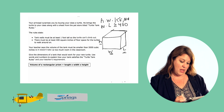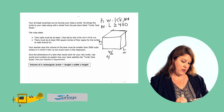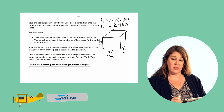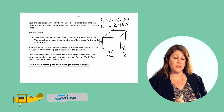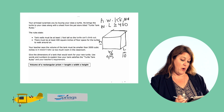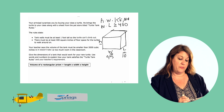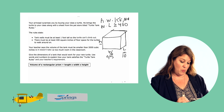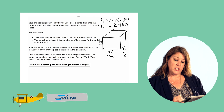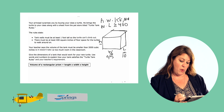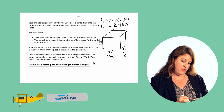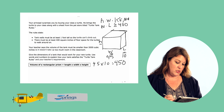Let's decide to make the width 45 inches and the length 10 inches — it's easy to multiply. 45 times 10 is 450. So 450 square inches of floor space for the turtle — that meets the requirement, since it's greater than or equal to 400. So the width is 45 inches and the length is 10 inches. Now we have width times length: 45 times 10 equals 450 square inches of floor space. Next we need to determine what the height will be.